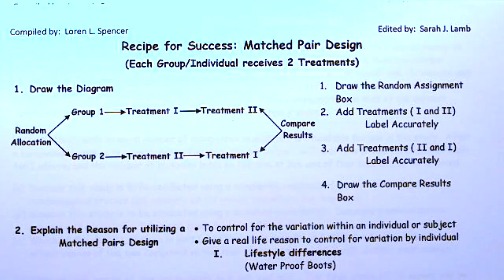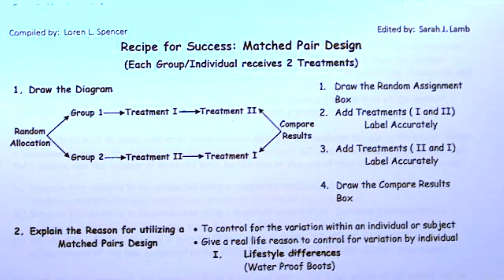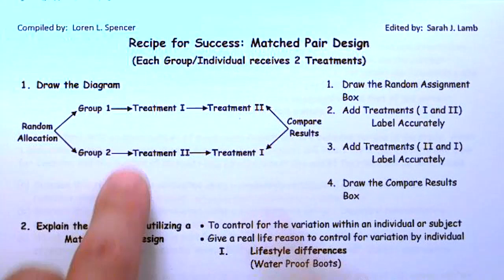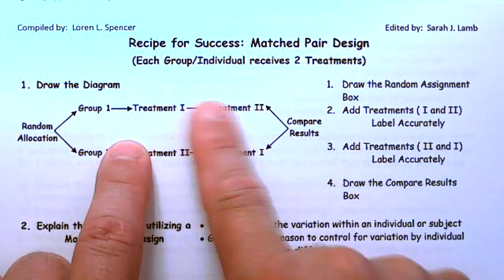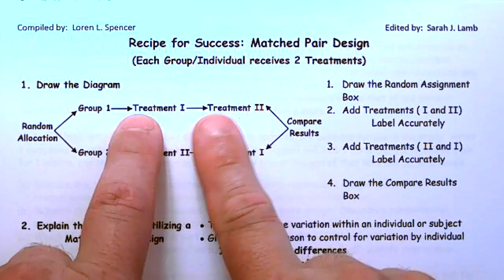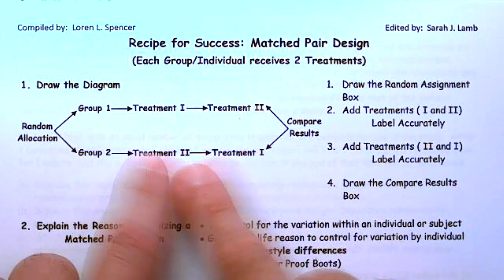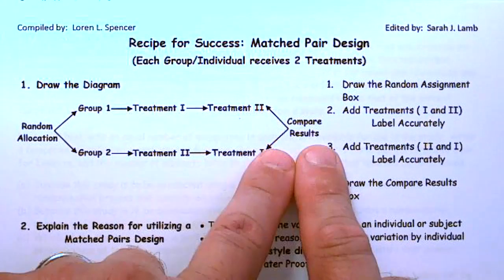By swapping the order, we are assured that it's not the order that matters. Because sometimes order does matter, but when we swap the order, we know it doesn't. So we always have to talk about random assignment — which treatment group, what treatments you're getting in which order, and then the results.